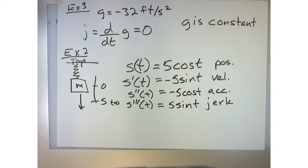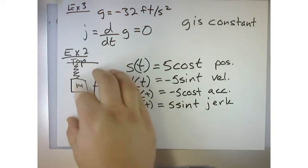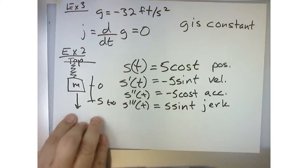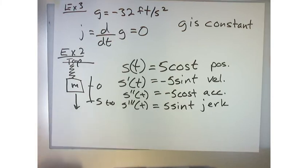So as this thing changes acceleration rapidly, there'll be a jerk. And the jerk will be at its highest point right before it changes direction. Right? Because there's a jerk in acceleration. Does that make sense? Yeah. All right.